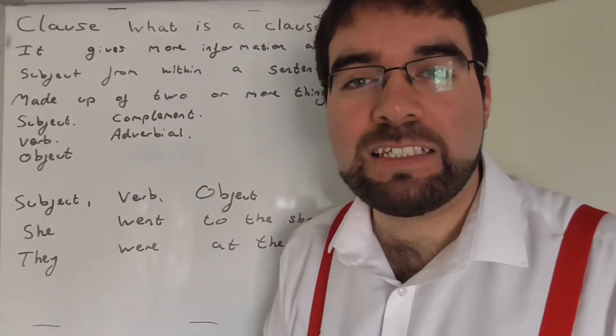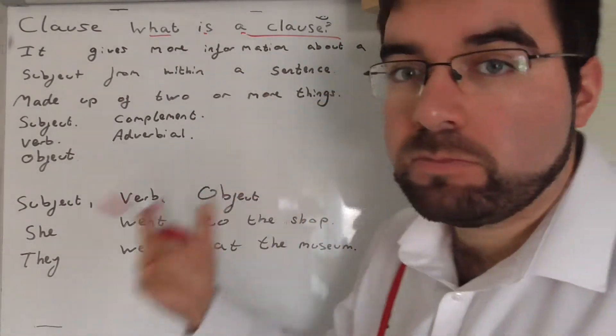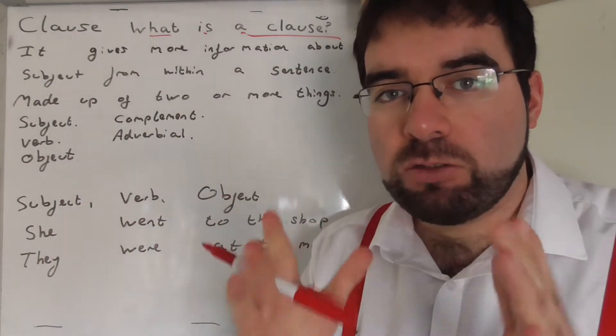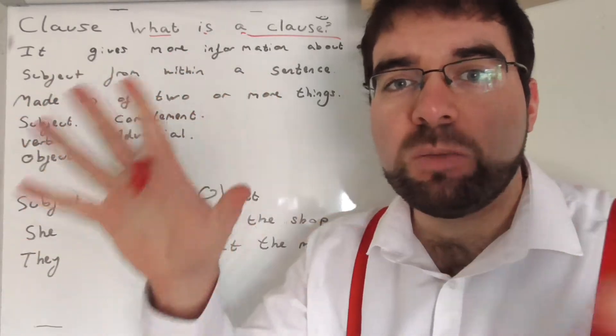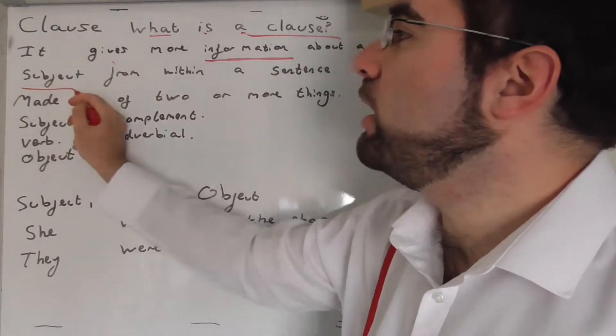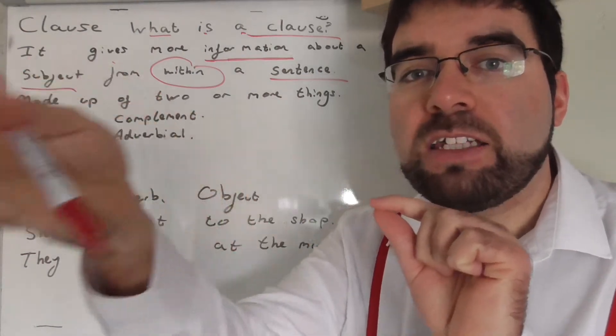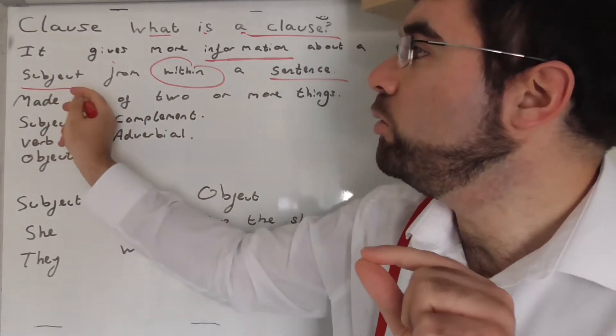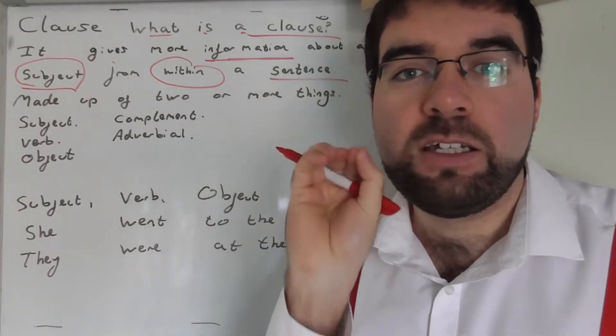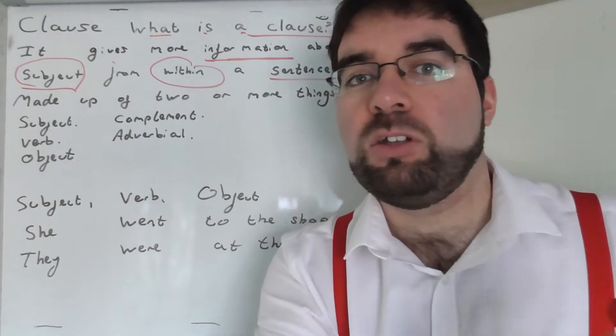Okay, so first thing we've got to understand is, what is a clause? What is it all about? A clause is a simple statement that helps to reveal and share more information about something. It gives more information about a subject from within a sentence. Within the sentence, we understand more about who the subject is, who it is about. We learn more through a clause. A clause is a little bit of a sentence. Something happened.